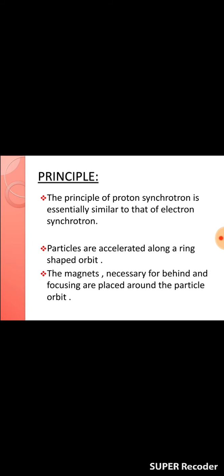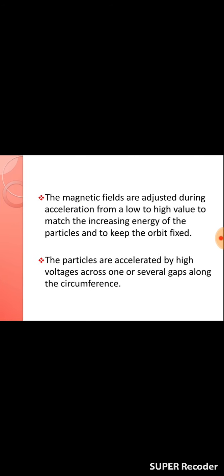The principle of proton synchrotron is essentially similar to that of the electron synchrotron. Here the particles are protons, which are accelerated along a ring-shaped orbit. The magnets necessary for bending and focusing are placed around the proton orbit. The magnetic fields are adjusted during the acceleration of protons from low to high values to match the increasing energy of the particle and to keep the orbit fixed.